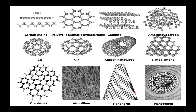Nanohorns and nanocones are similar carbon nanostructures with sharp edges. Nano onions are another form — similar to an onion, they consist of multiple mineral layers arranged in a spherical structure, which is why they are called nano onions.